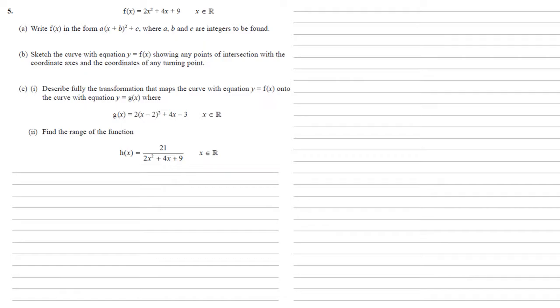For part c we need to describe fully the transformation that maps the curve with equation y = f(x) onto the curve with equation y = g(x) where g(x) = 2(x - 2)² + 4x - 3.